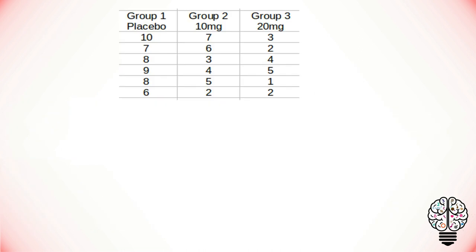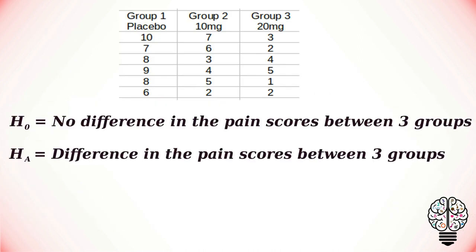The pain scores are listed below. Our null hypothesis is that there is no difference in the pain scores between the treatment groups, and our alternative hypothesis states that there is a difference in pain scores between the three groups.